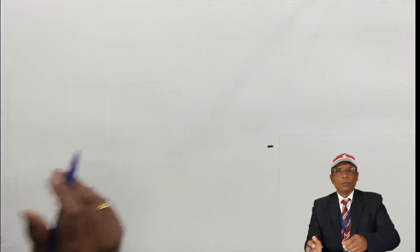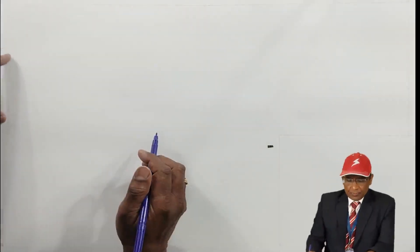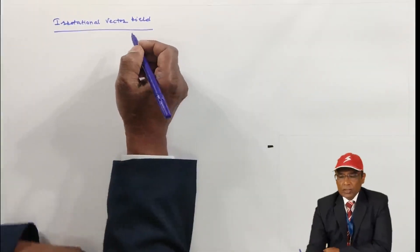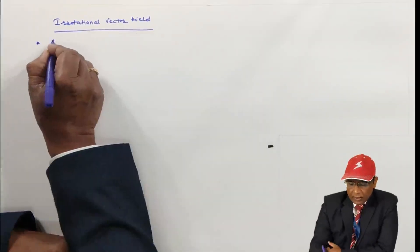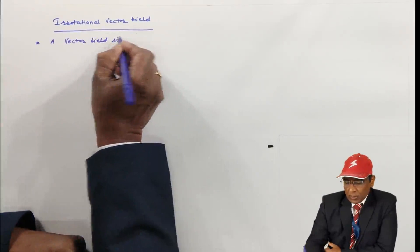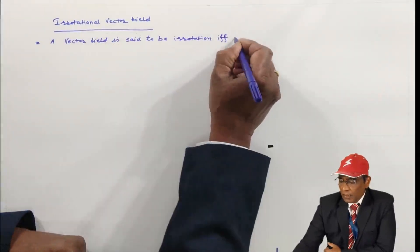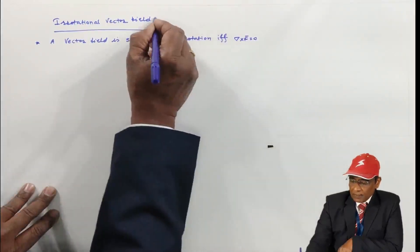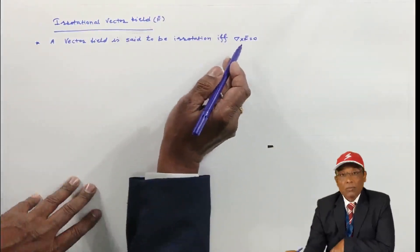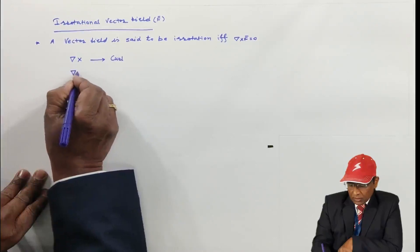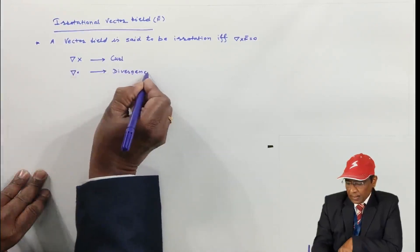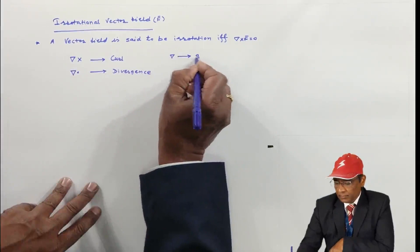One more concept we are going to discuss in this lecture is the irrotational vector. A vector field is said to be irrotational if and only if del cross f̄ equals zero, where f̄ is a vector field. Del cross f̄ means the curl of f̄, while del dot is the divergence and del alone is the gradient.